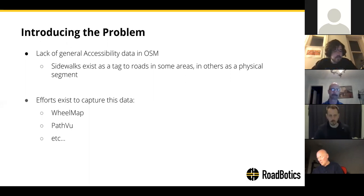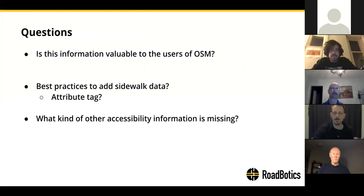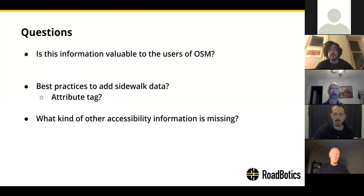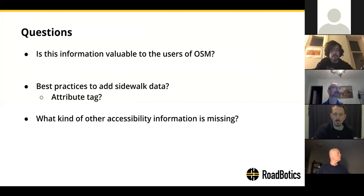I really wanted to kick off the conversation with a few questions. How is accessibility information useful and valuable to the users of OSM? Not only for Roadbotics, where we're looking to take sidewalk data and display whether or not a sidewalk needs repair or is actually accessible — does it have a curb ramp? — but also from a user's perspective. People like WheelMap and Pathview have their own app for pathfinding for those who are not able-bodied. So, how is this information valuable to OSM itself as well as its users?